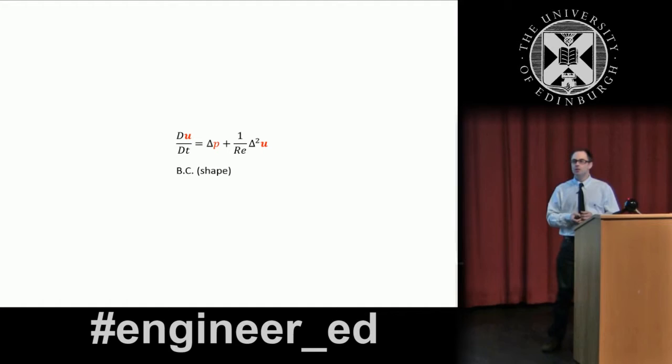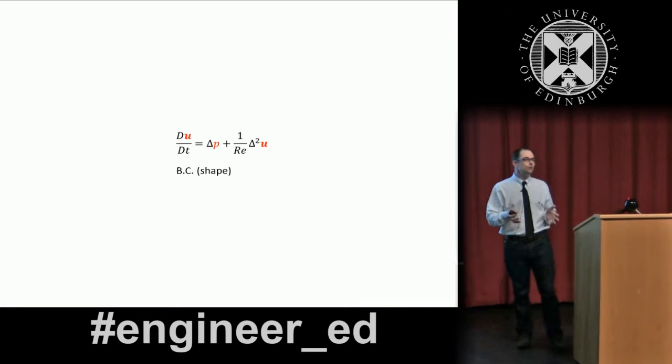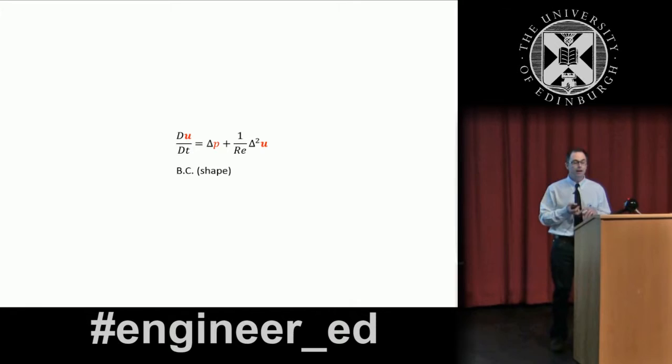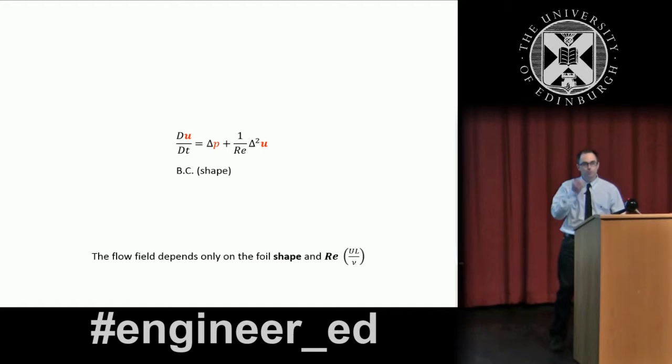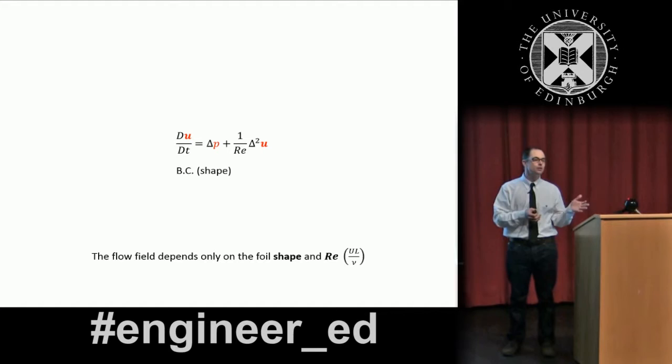The other interesting thing is that if we want to compute or predict these forces, we need to solve this equation. And what this equation tells you is that the lift and the force only depends on two different things, the shape of the foil and the Reynolds number. The Reynolds number is this number here. And the reason why it is important is because it means that the forces on the airplane or on a bird, they are the same as long as the Reynolds number is the same.